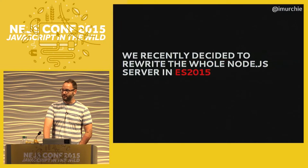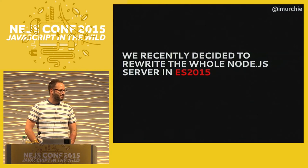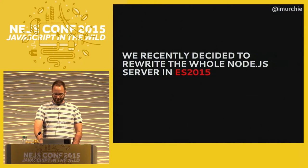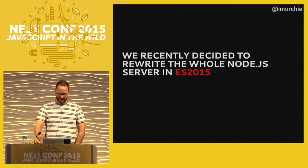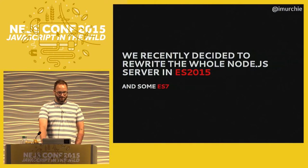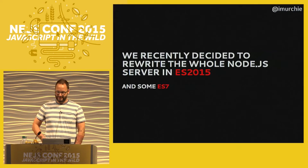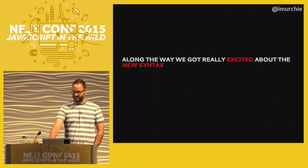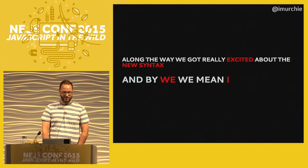Appium is entirely written in Node.js, and we recently decided to rewrite the entire thing — which is 150 to 200,000 lines of code — in ES2015. We've gotten a little past the single-line tutorials you find on the web, and we even get some ES7 because async/await is too nice to skip. Along the way we got really excited about syntax.